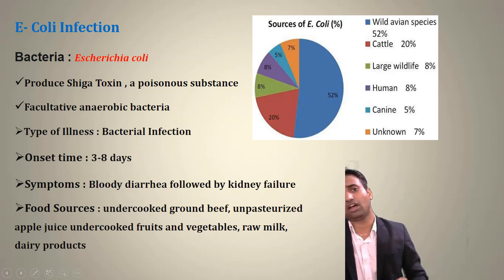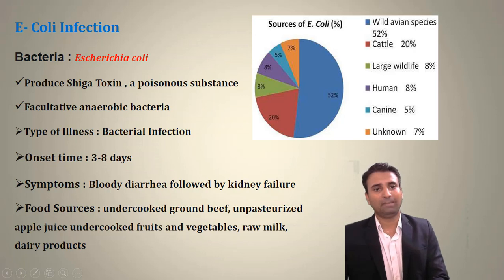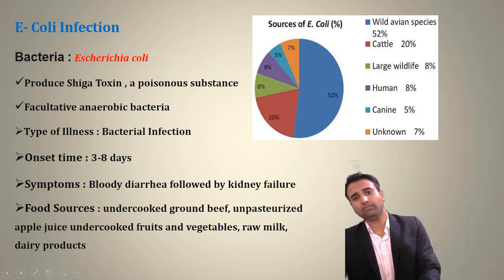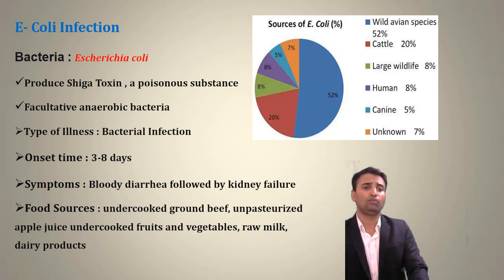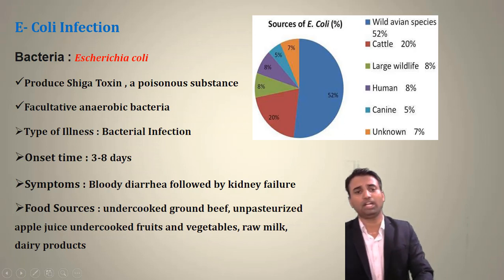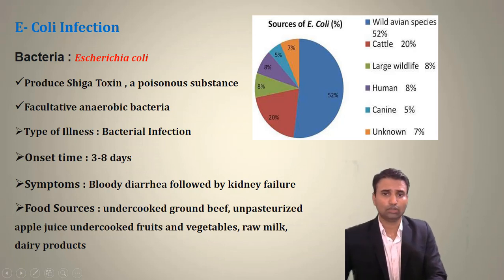Symptoms of E. coli infection include bloody diarrhea followed by kidney failure. Food sources include undercooked beef, unpasteurized apple juice (pasteurization should occur at 90°C, but improper processing leaves some juice insufficiently heated), and raw milk and dairy products.